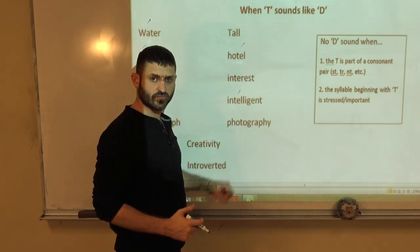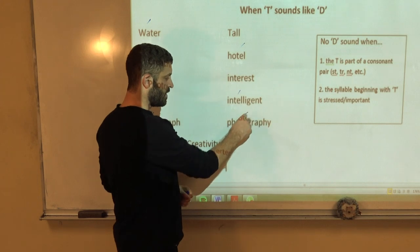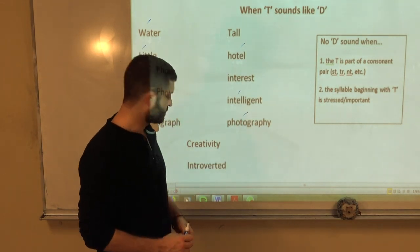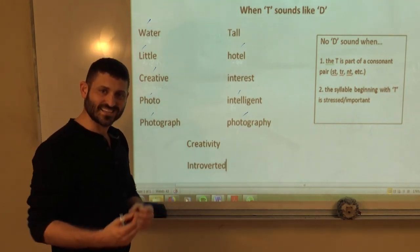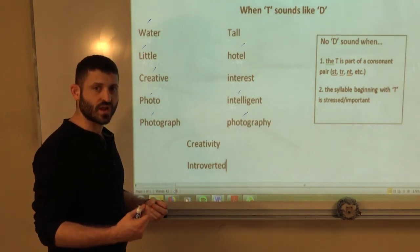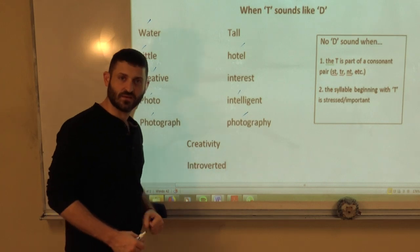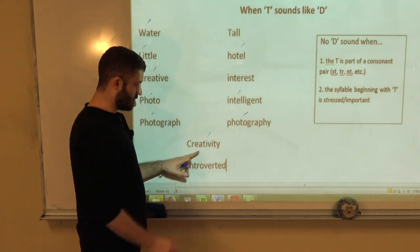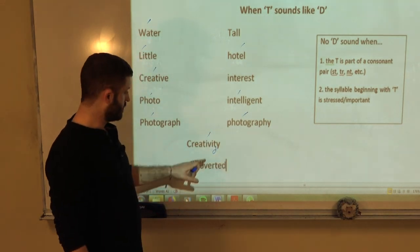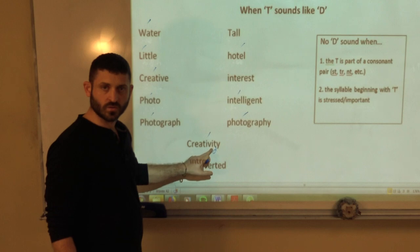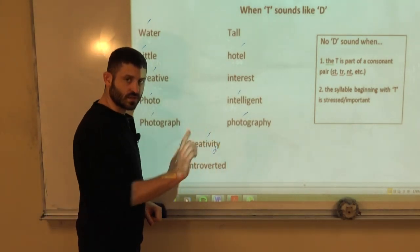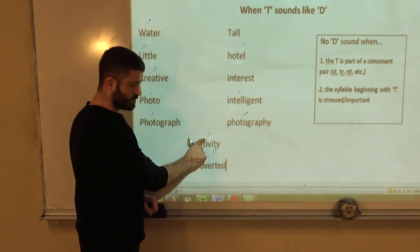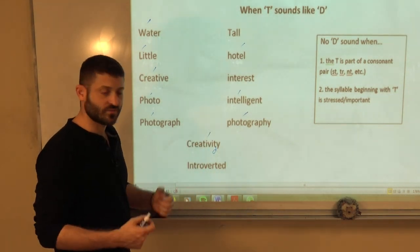And, photography. Photography, where's the stress? Well, it's on the T syllable. Photography. So, we want to keep the T. And, here are two words that have both a T and a D sound to give you more of an idea. Creativity. Creativity. Do you hear the T and the D? Creativity. D sound, T. You have vowel sound on both sides of the T. And, the T is not stressed. You make it a D. You have a vowel sound on both sides. But, the T syllable is stressed. So, you want to keep the T. Creativity.